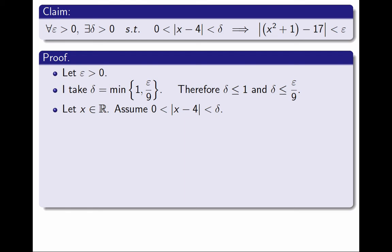Next, I fix an arbitrary real number x, and I assume the distance between x and 4 is between 0 and δ. This implies that this distance is less than ε over 9, and also less than 1. Since it is less than 1, x must be between 3 and 5, and therefore x plus 4 must be between 7 and 9.